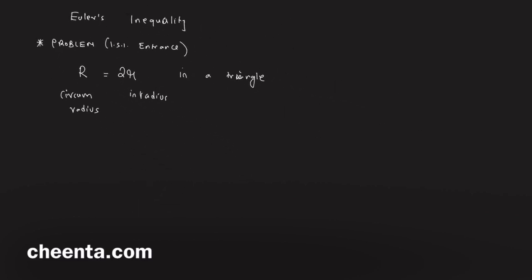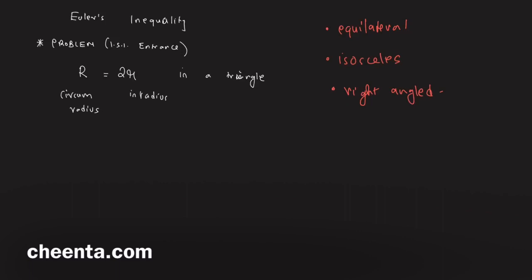Given this condition, what can you say about this triangle? Could it be equilateral, isosceles, or right-angled? This problem heavily uses Euler's inequality or identity, and it's part of the Chinta Math Olympiad and ISI entrance program as well — a link in the description will tell you more.